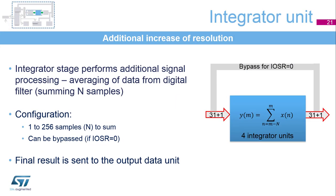The integrator unit performs additional simple averaging of the data provided by the digital filters. It sums the incoming data, and the number of samples to be summed can be set from 1 to 256. The correct configuration must guarantee that the final data length fits into the 31-bit width, which is the resolution of the internal integrator. The width of the data coming from the digital filter must also be taken into account.